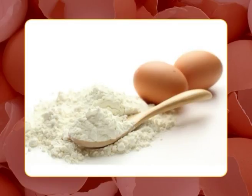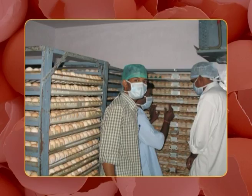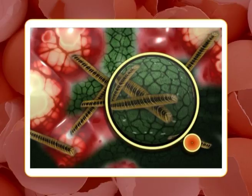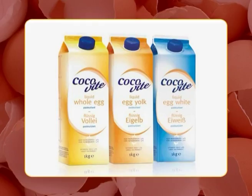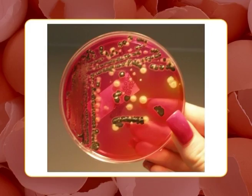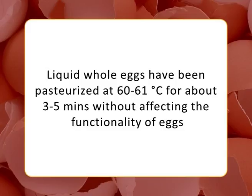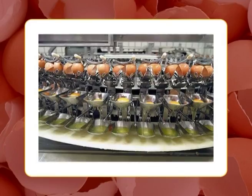Drying the egg contents — egg white and egg yolk — reduces bulk and helps in easy transportation and storage. Liquid eggs may become contaminated with pathogenic and spoilage microorganisms that may multiply under improper conditions. Therefore, egg products are pasteurized under conditions that destroy Salmonella while reducing spoilage organisms. Liquid whole eggs have been pasteurized at about 60 to 61°C for three to five minutes without affecting the functionality of eggs.